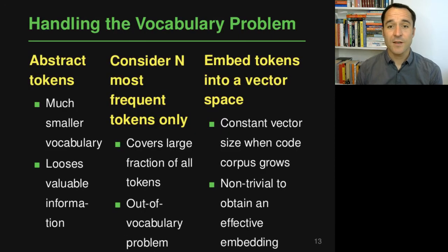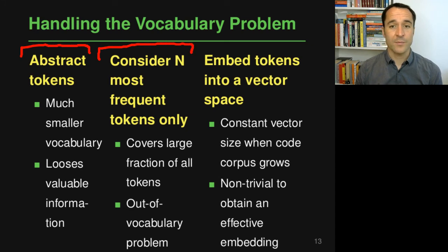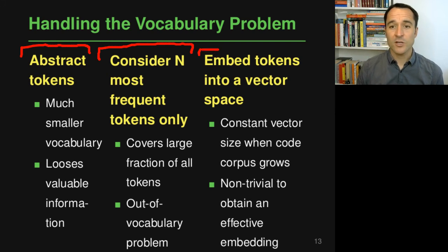So now we've seen the first two approaches: how you can abstract tokens and reduce the vocabulary size that way, and what happens if you just consider the top N most frequent tokens. In the next part of this module we'll look into the third approach, which is to embed tokens into a vector space. This is all for this first of three parts in the module — thank you very much for listening, and see you next time.